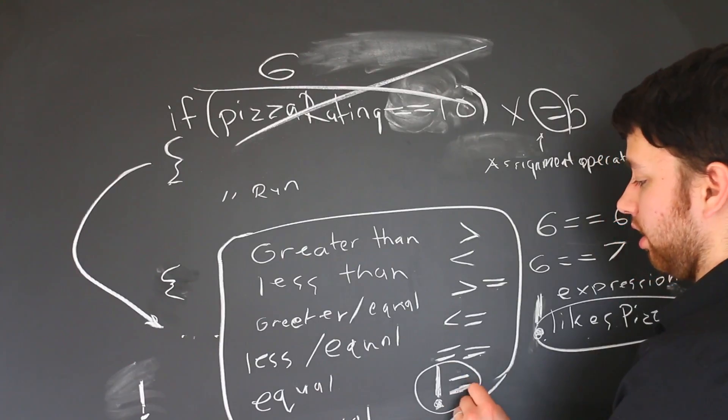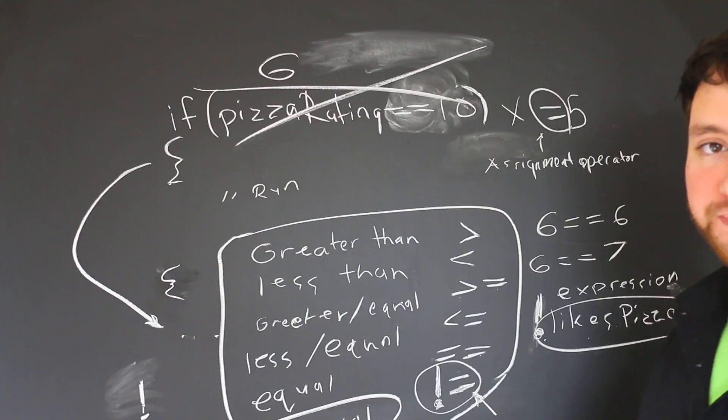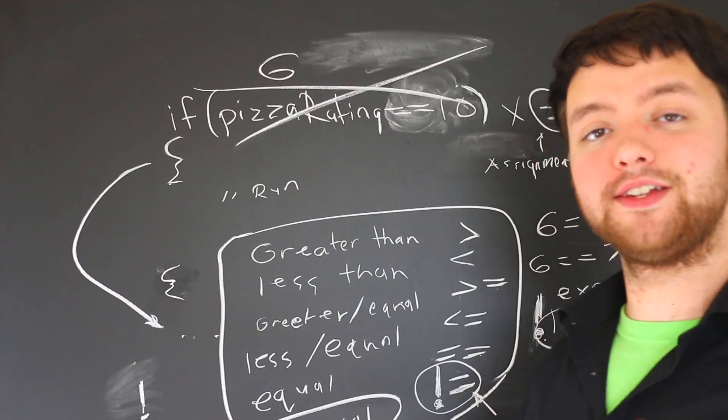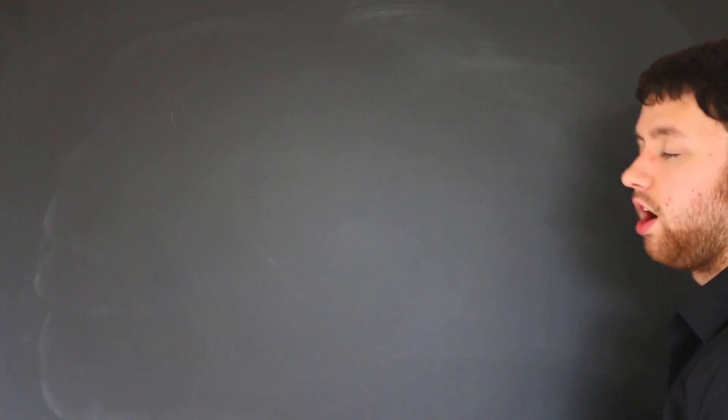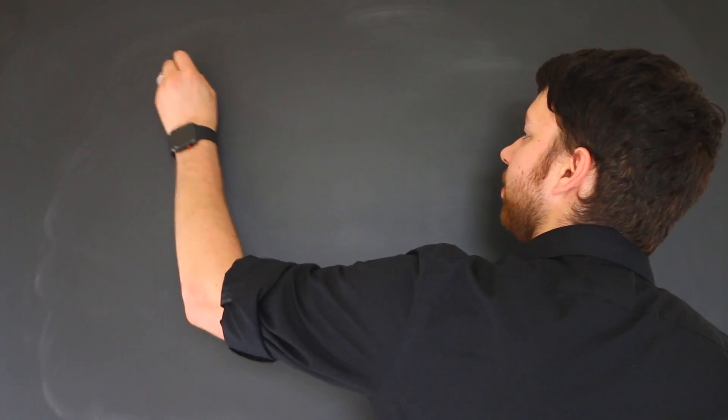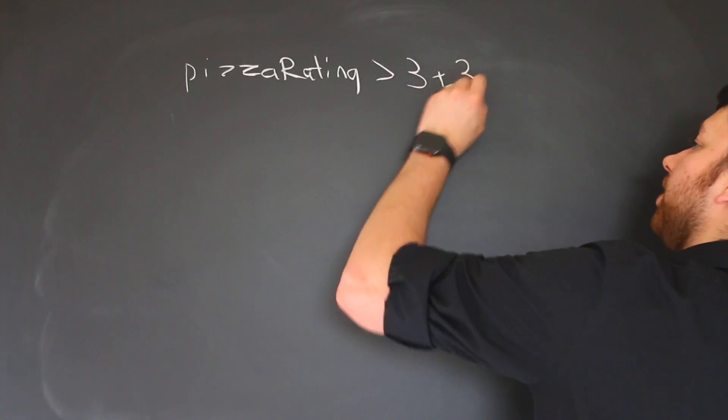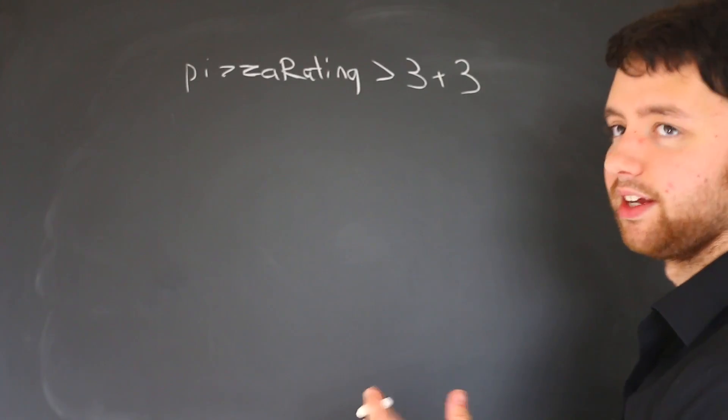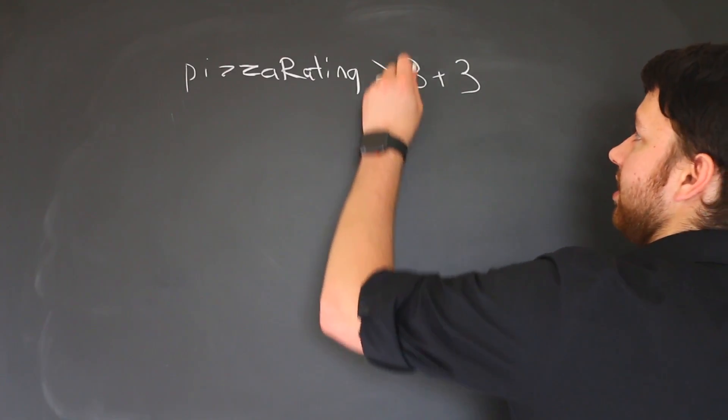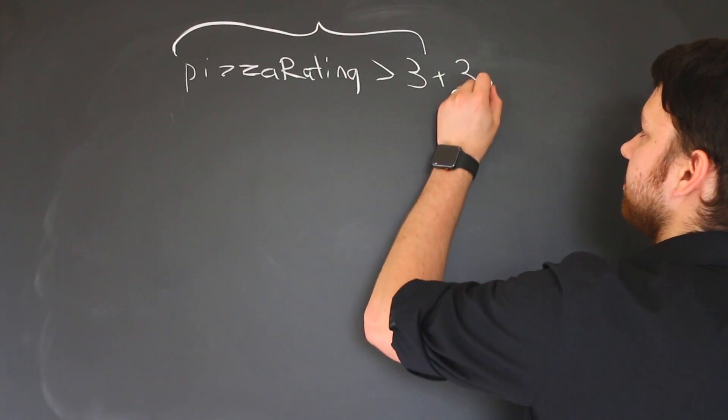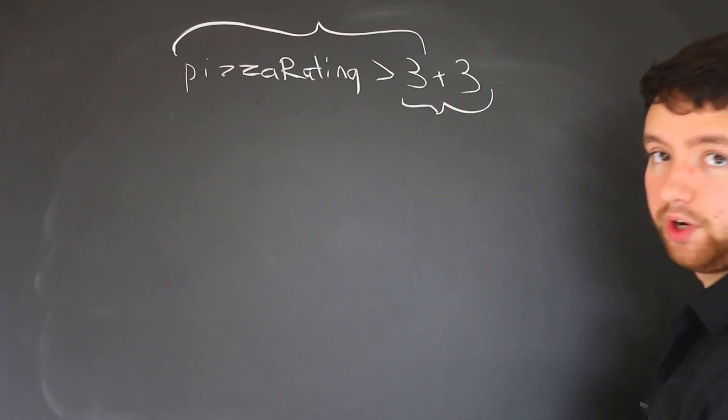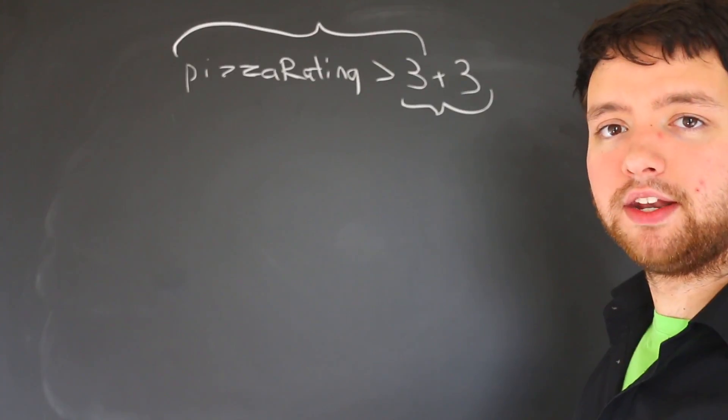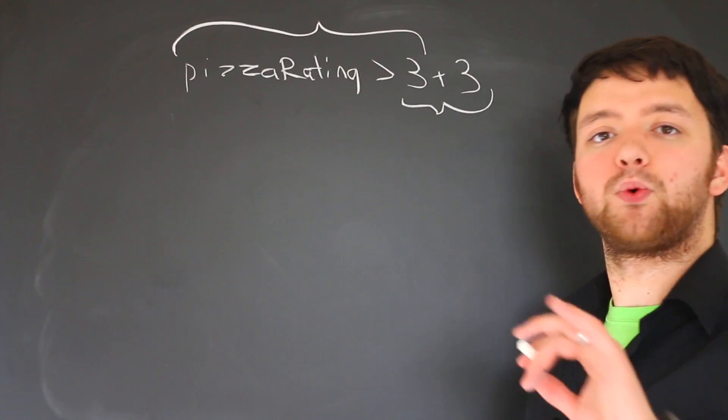Now I'm going to bring up something known as precedence here, and I'm just going to touch on it a little bit. So I'm going to give you a little example. As you build more complex expressions, you have to understand precedence of these operators. For example, if we did this: it's greater than three plus three. This is a little bit confusing because you could think of it as this plus three, or you can think of it as this, where pizzaRating is greater than three plus three.